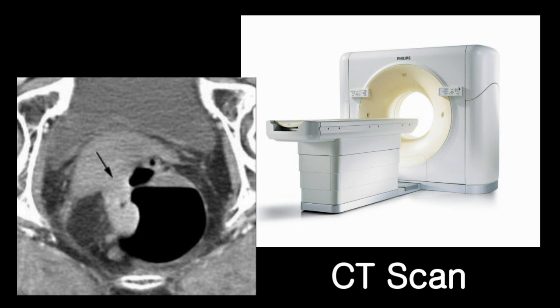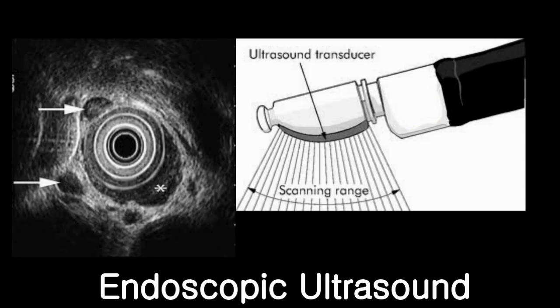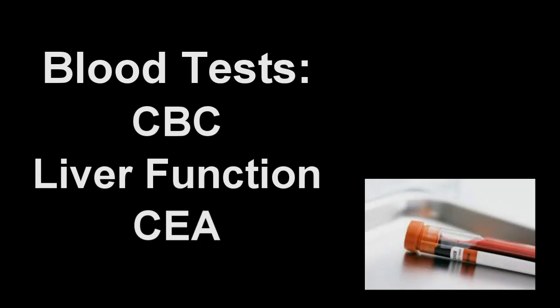The CAT scan allows an initial assessment of the extent and spread of cancer. In addition, an endoscopic ultrasound may be helpful in assessing the local spread of the cancer. At the same time, routine blood tests, including complete blood count, liver function test, and a tumor marker called CEA, are usually obtained during the initial evaluation.